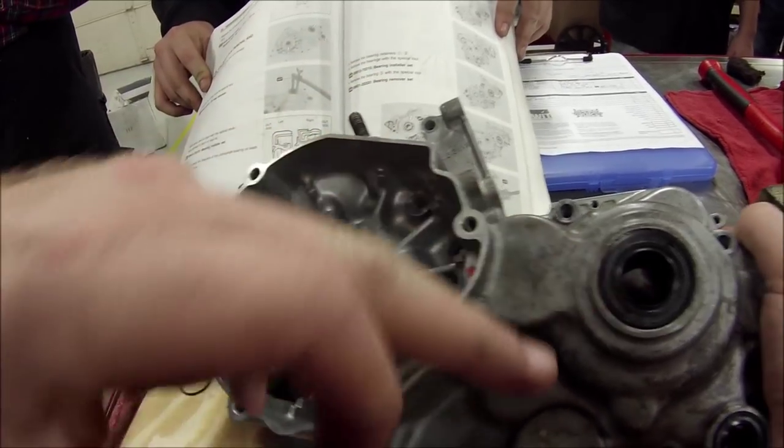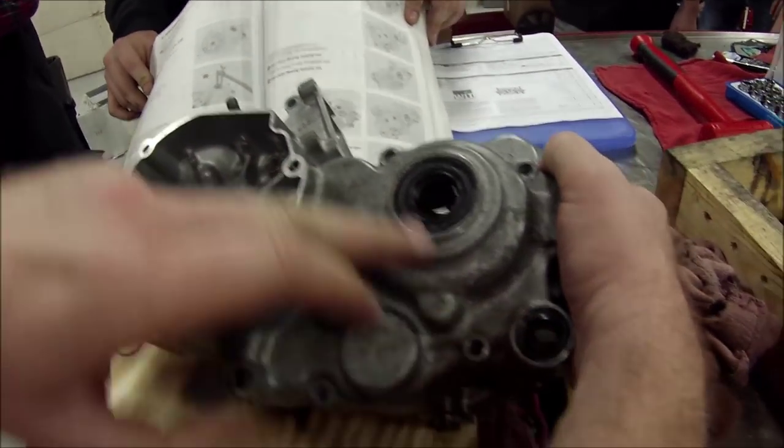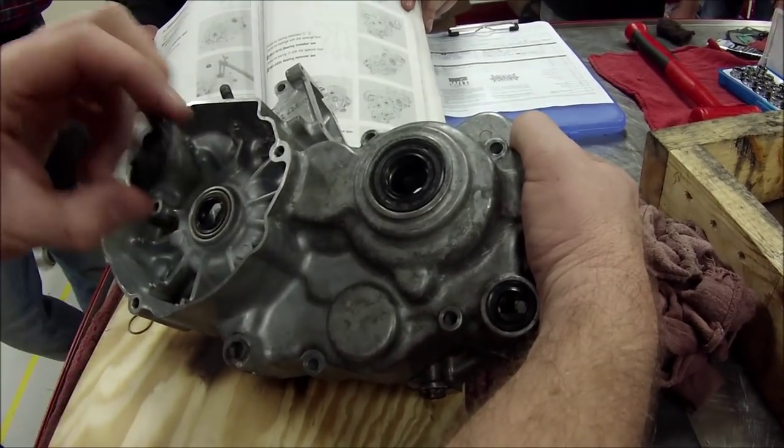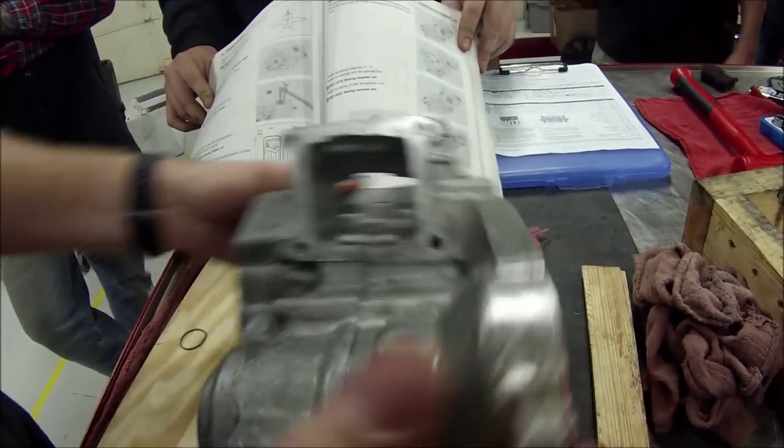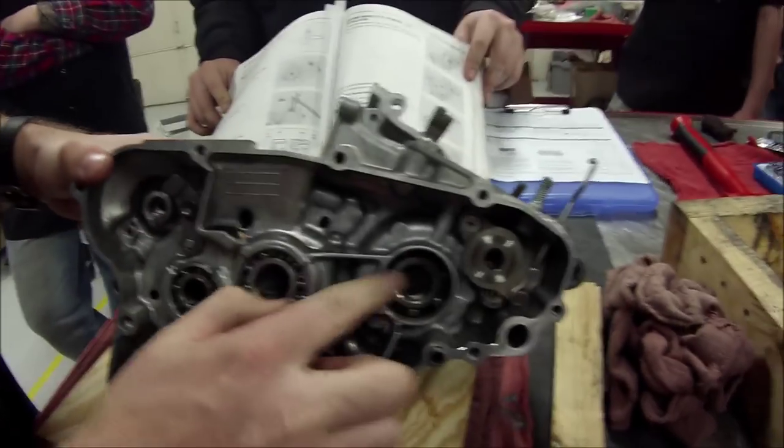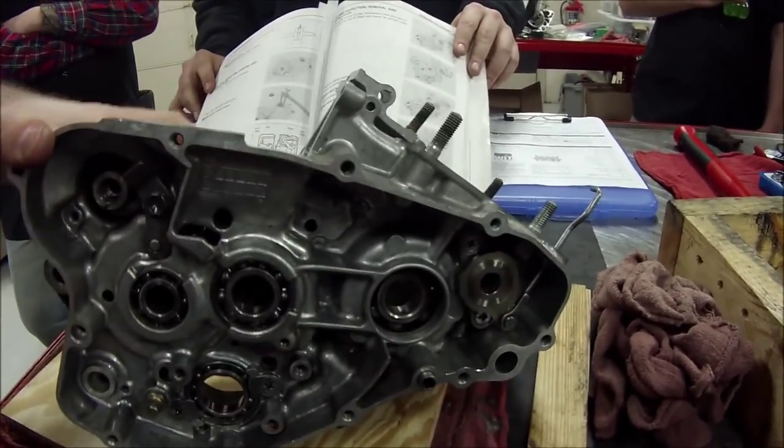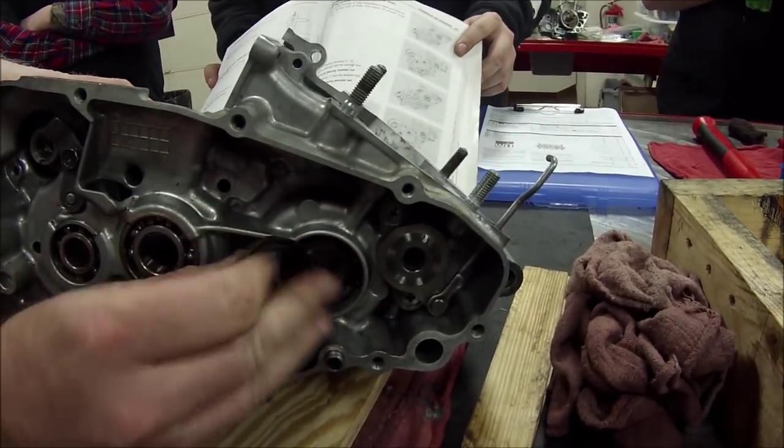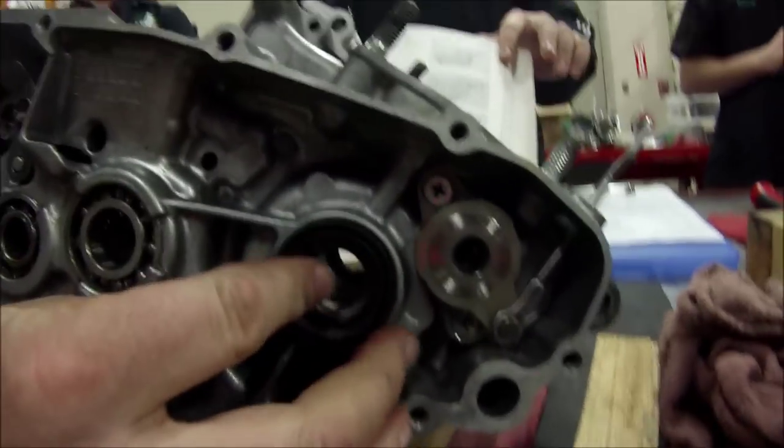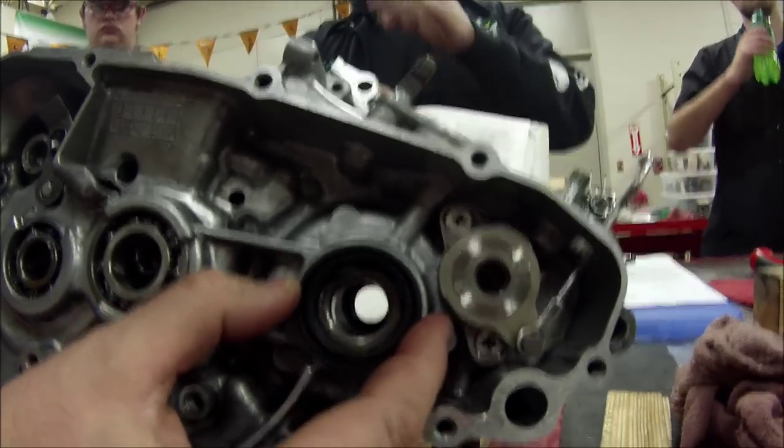Now, would you say for most all the oil seals, if you take a look at these numerous ones, do you see how you don't see the spring? Okay? On this Suzuki, on the right crank seal here, this actually has to be installed in this direction.